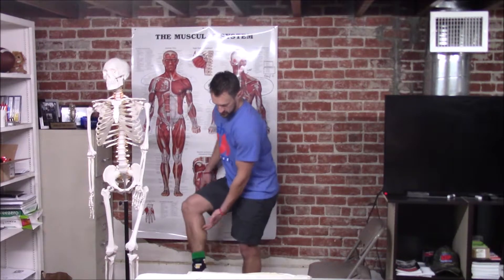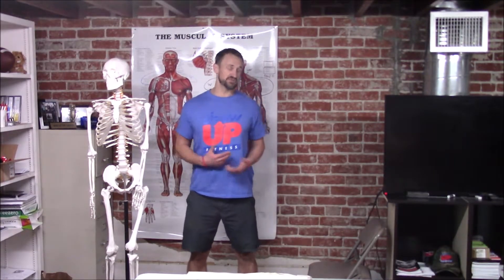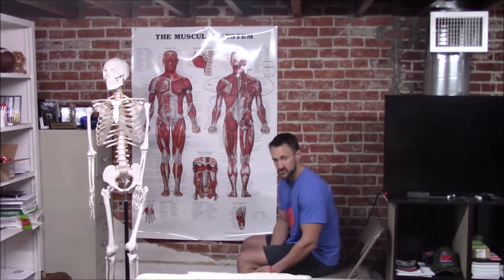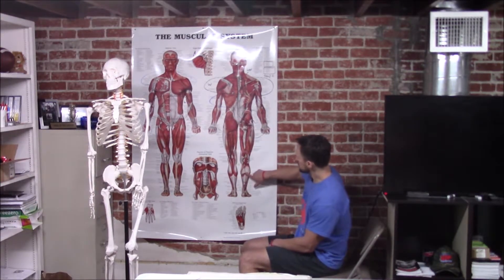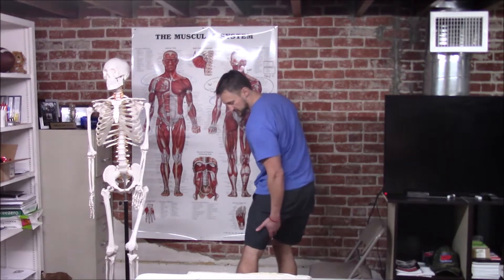We have the gastrocnemius, which is biarticulate, meaning it crosses two joints. Standing calf raises work the gastroc more, whereas seated is more the soleus because we're bending or flexing the knee, so the gastroc isn't engaged as much. Seated is more soleus. The soleus is the lower one, gastroc is higher.